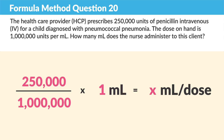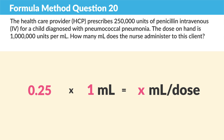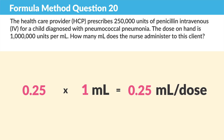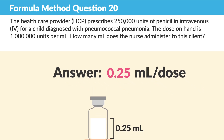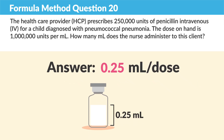So your formula looks like: 250,000 over 1,000,000 times 1 ml. Simply divide 250,000 by 1,000,000 and that equals 0.25. So 0.25 times 1 ml is 0.25 ml's per dose. The correct answer is 0.25 ml's.